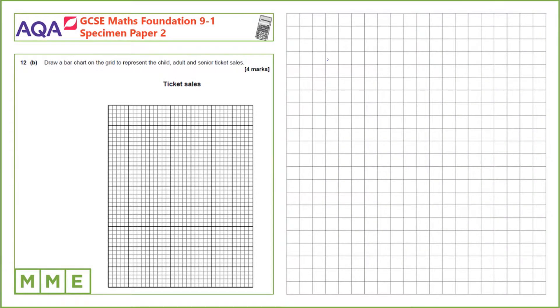Question 12b. Draw a bar chart on the grid to represent the child, adult, and senior ticket sales. We have the senior ticket sales from before. That was 140. We need to calculate the adult and child ones.